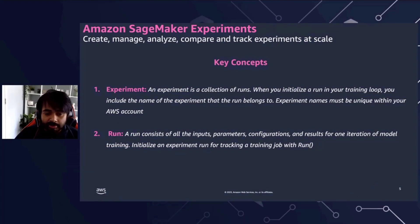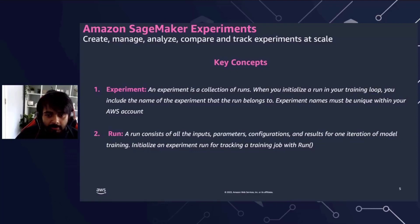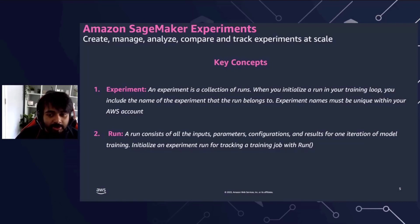Today, we have simplified a user's interaction with SageMaker Experiments by asking our users to define just two components at runtime: an experiment and a run. A run is a collection of inputs, parameters, configurations, and results for one iteration of model training. An experiment is just a collection of runs. You can have multiple runs within an experiment, each with its own unique combination of variables.